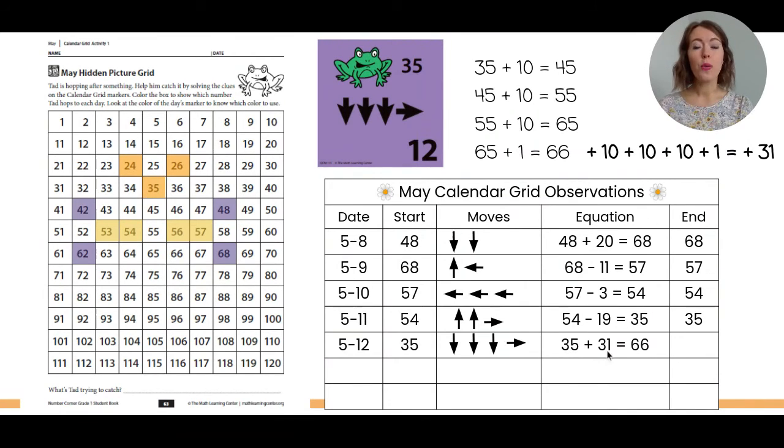So starting at 35, we added 31 to land on 66. Let's color 66 purple on our May hidden picture grid.